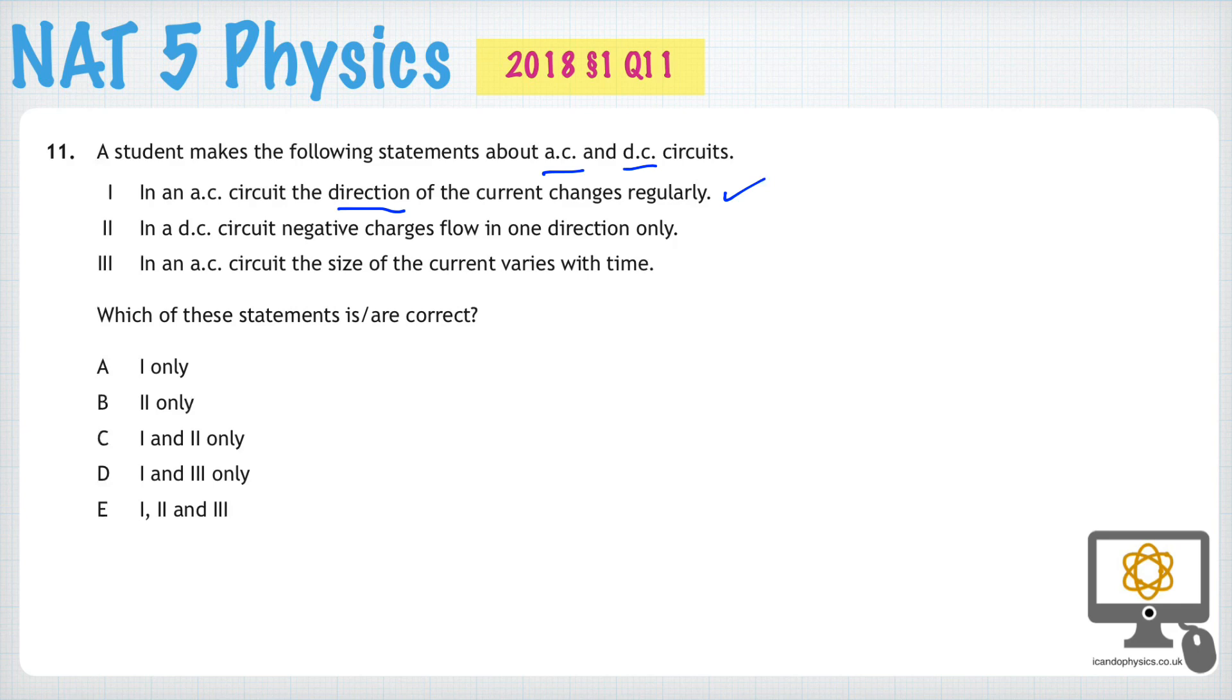Part 2, in a DC circuit, that's direct current, negative charges flow in one direction only. Well, negative charges is correct because they are electrons and they all flow in the same direction, so that's also correct.